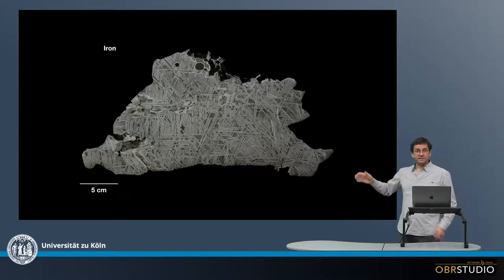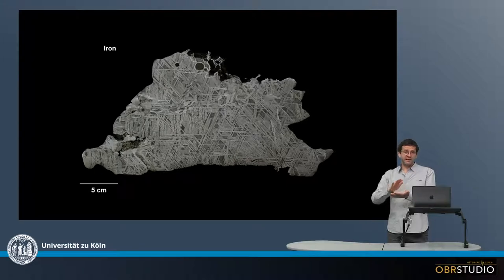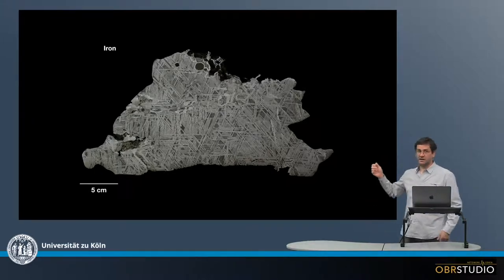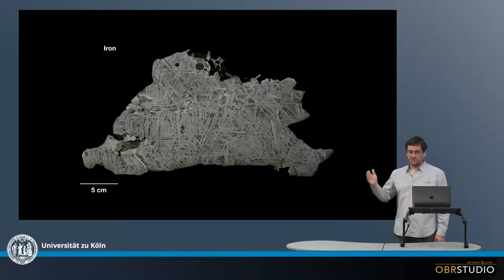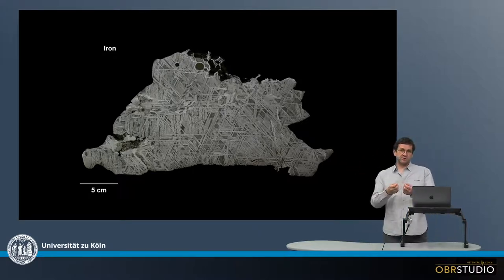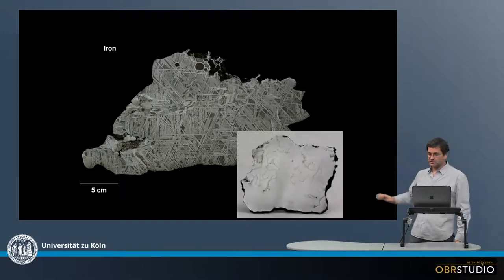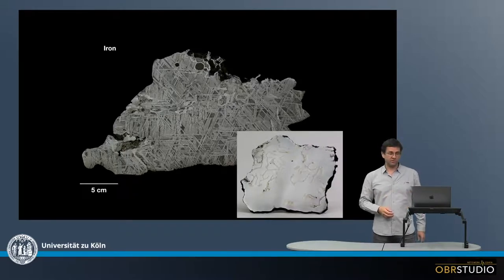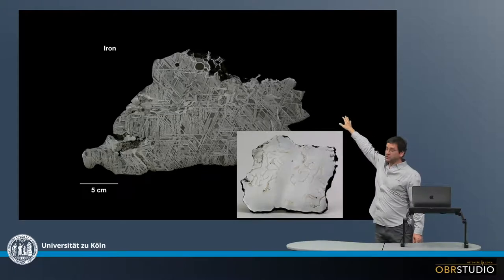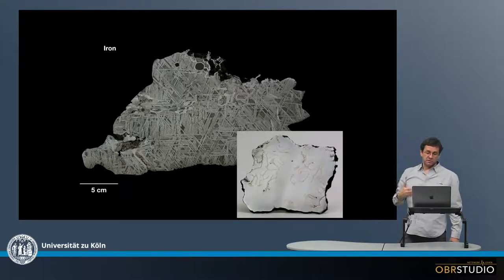We can only see this when you cut open the meteorite, polish it, and then etch it with for example some nitric acid. Because the various phases have different resistance to the acid, they then reveal the structure of the kamacite and taenite intergrowth. But this is not always the case, as can be seen in this iron meteorite where we don't see this kind of structure. It really depends for example on the cooling history. Some of the blebs we might see in iron meteorites could be sulfides — very often it is sulfide.